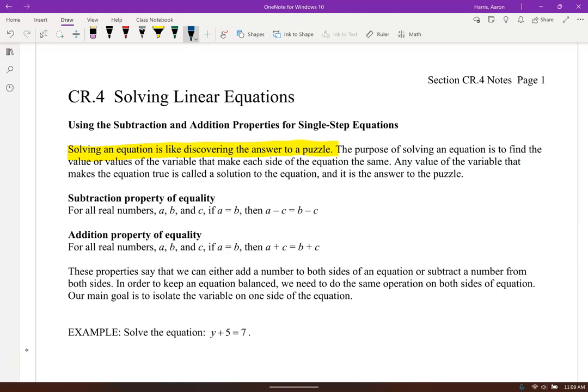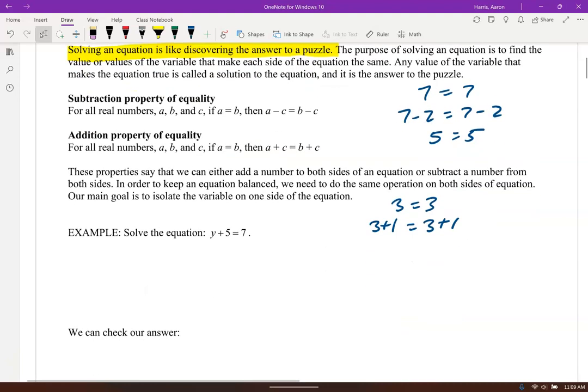If you have, if a equals b, for example, 7 equals 7, then of course if you subtract 2 from one side, you've got to subtract 2 from the other side to keep these equal. Same thing for addition. If 3 equals 3, and you add 1 to both sides, you've got to add 1 to the other side as well.